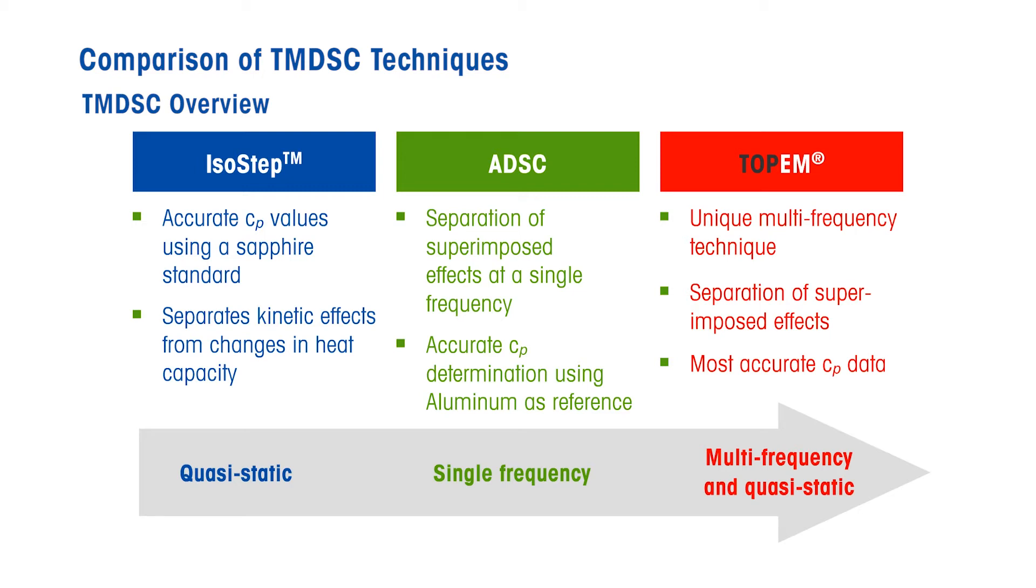In addition, the complex frequency-dependent specific heat capacity can be determined from the quasi-static specific heat capacity. This yields the most accurate specific heat capacity values in comparison with all other techniques, including conventional DSC. ISO-STEP and ADSC are explained in separate videos.